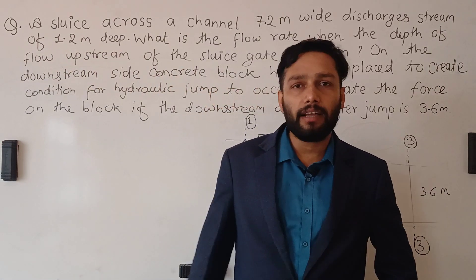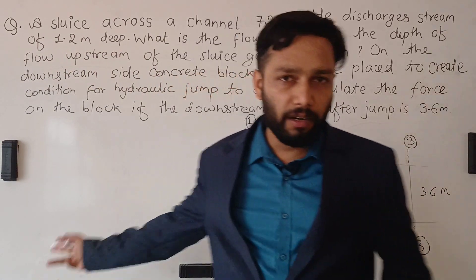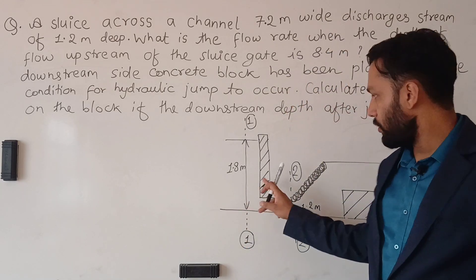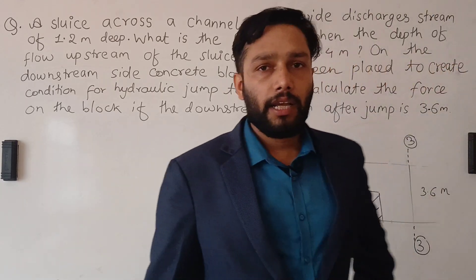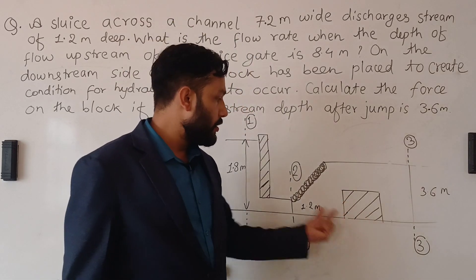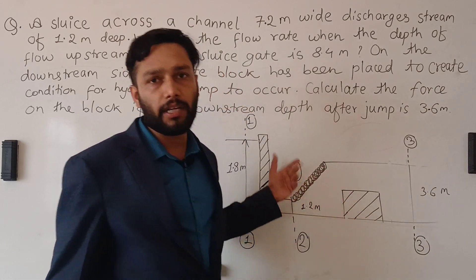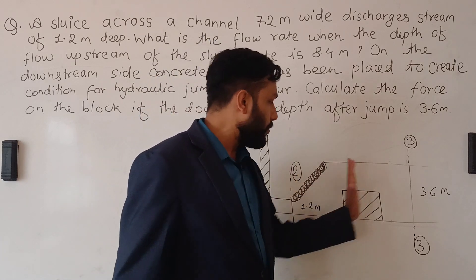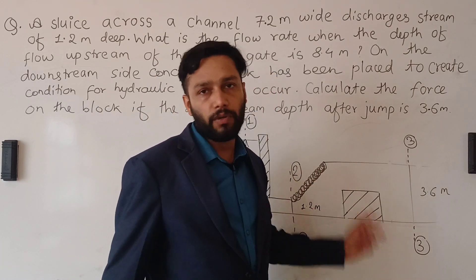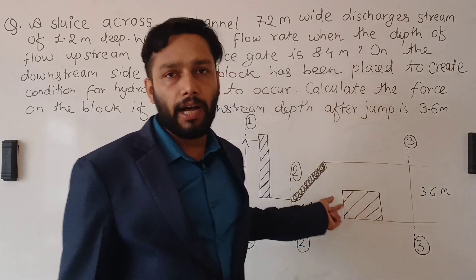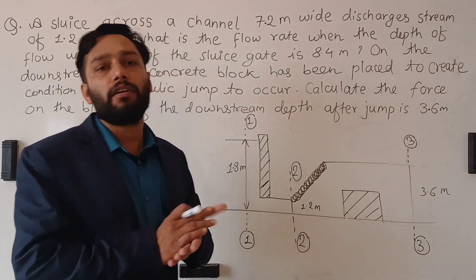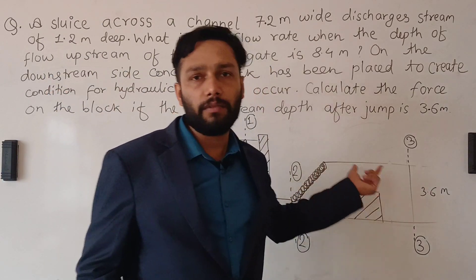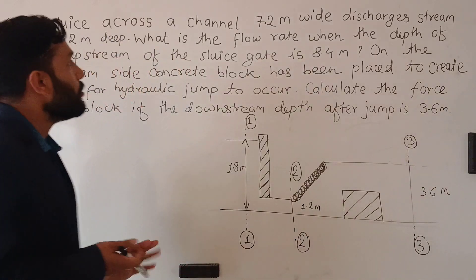Hello everyone, welcome back to my channel. I am Avsak Poudil. Today I am going to solve a problem from hydraulics non-uniform flow. You can see here a sluice gate discharging water, and a concrete block has been placed downstream of the sluice gate in order to create the hydraulic jump zone. You are supposed to find out the force exerted by this flowing water on the concrete block. I will show you how to apply the energy equation and momentum equation in open channel flow to solve this kind of problem.